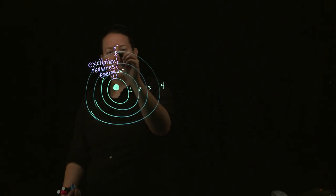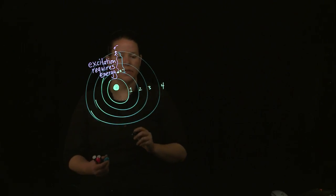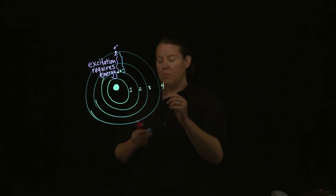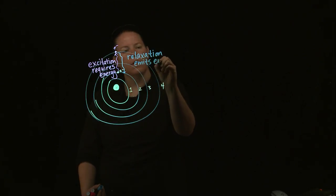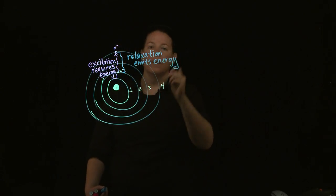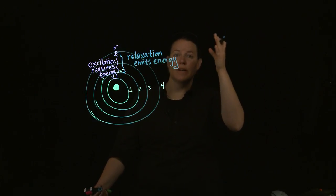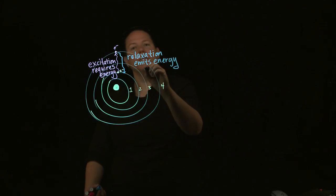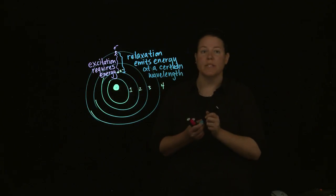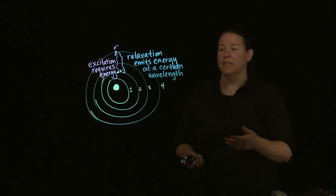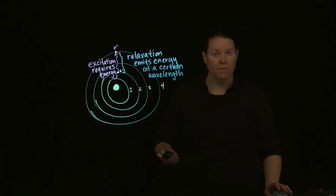So excitation goes from lower energy levels, which are closest to the nucleus in the Bohr model, to higher energy levels. Eventually, that electron is going to have to come back down to the original energy state. And that process is called relaxation. When that happens, it emits energy. And from Planck's equation, we can find out that when it emits energy, it can emit it at a certain wavelength.